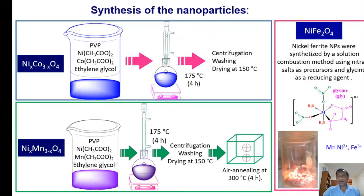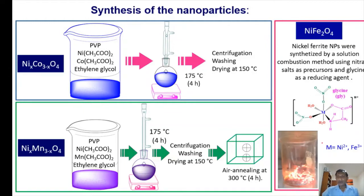On the other hand, nickel ferrite nanostructures were synthesized by solution combustion method where we used nitrate precursors. Metal precursors were nitrates and glycine as a reducing agent. While heating, glycine reacts with these metal nitrate precursors and forms glycine-metal complexes, which during the combustion process break down to produce the ferrite particles.